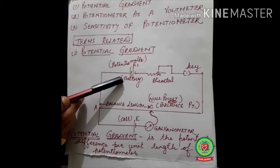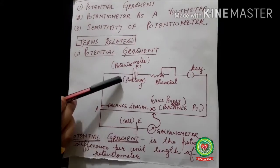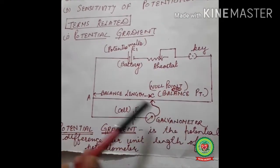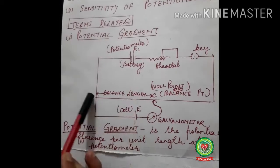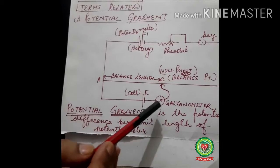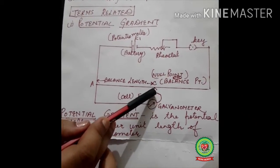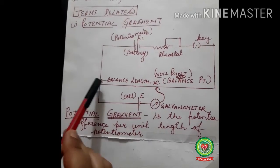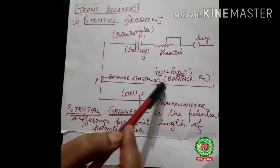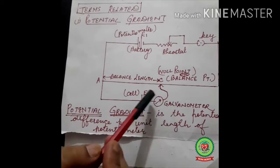This is a circuit of a potentiometer. Here we have a battery with EMF E1. Then comes a rheostat, then the key — they are all connected in series. Then there is the potentiometer wire made up of Constantan. With this we have a galvanometer attached, and here we have a jockey.